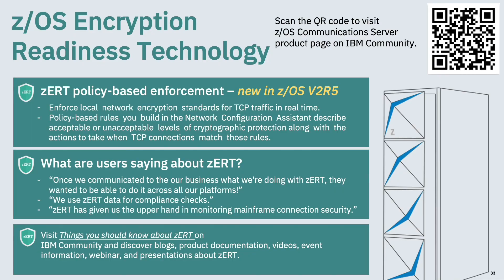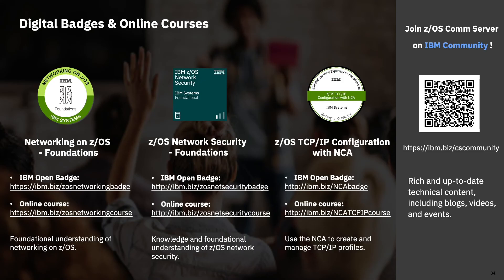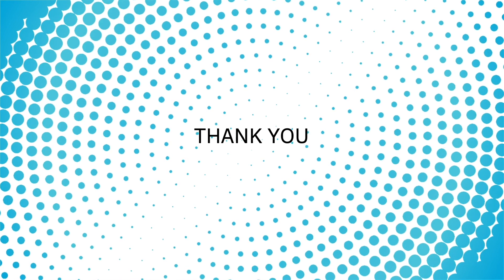For more information, you can visit the ZOS Communication Server product page on IBM Community. There is a direct link to 'Things You Should Know About ZERT' which has all kinds of information including webinars, demos, and product documentation — highly recommended as a starting point. We also have educational opportunities and open badges you can earn, including an overview on networking on ZOS, a new ZOS network security badge, and TCPIP configuration with the Network Configuration Assistant. Thank you for attending this session.